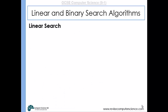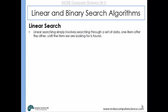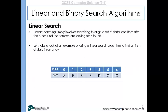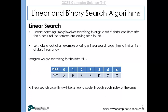With a linear search, this just involves stepping through each item of data in a set of data one after the other until the item we're looking for is located. If we had the following array where we've got items A, F, B, E, D, G, and C, each having their own location, and we were looking for the letter D, a linear search would: